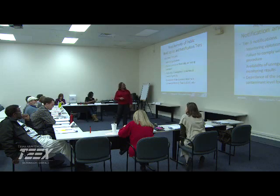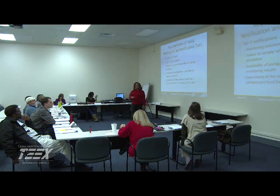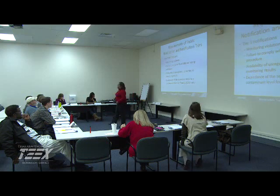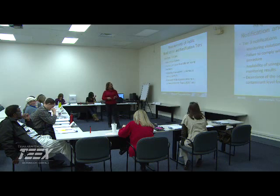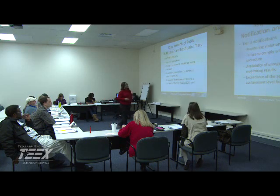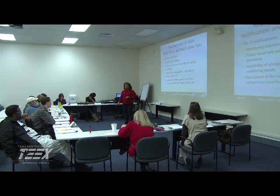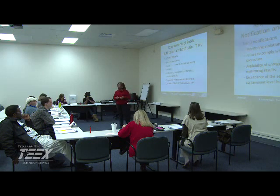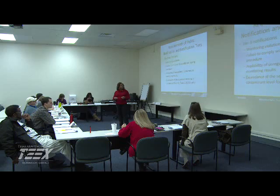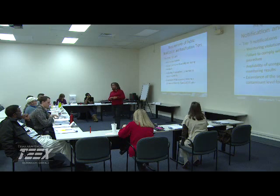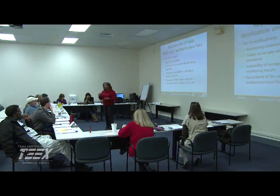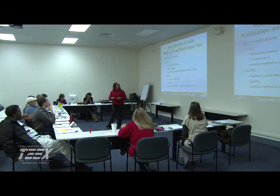Tier 3 notification: any monitoring violations, failure to comply with established testing procedures. Anything we report must use an approved method. Availability of unregulated contaminant monitoring results — if that is a requirement, you're supposed to be monitoring something that's not on the regulated list, you've got to do it and keep the results. Exceedance of a secondary maximum contaminant level for community systems — that's for fluoride only. In this case, the secondary does matter. Same methods of delivery as with Tier 2s.